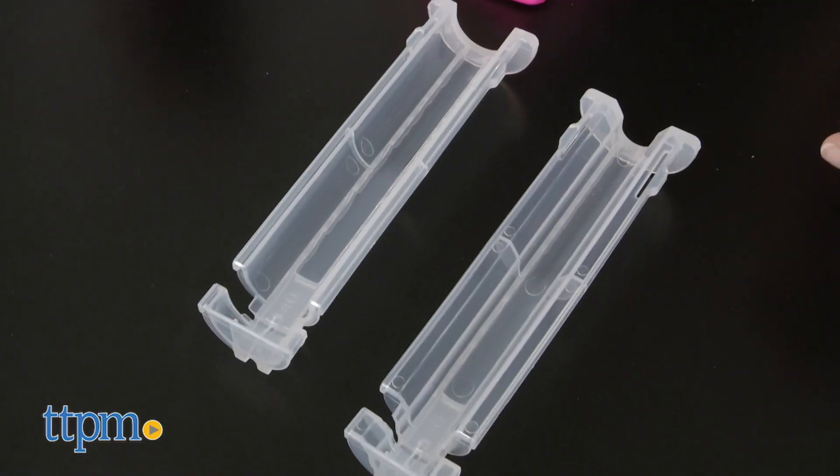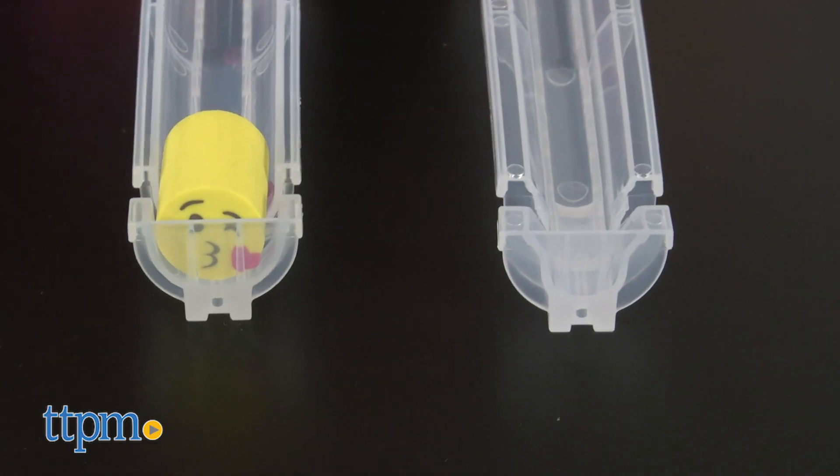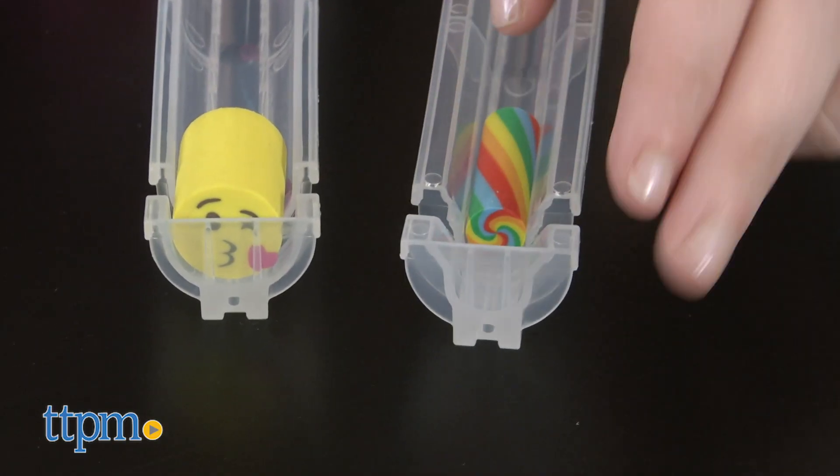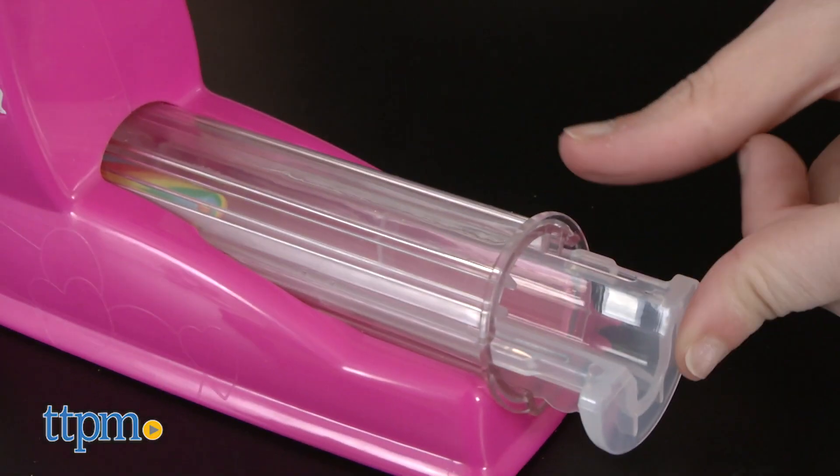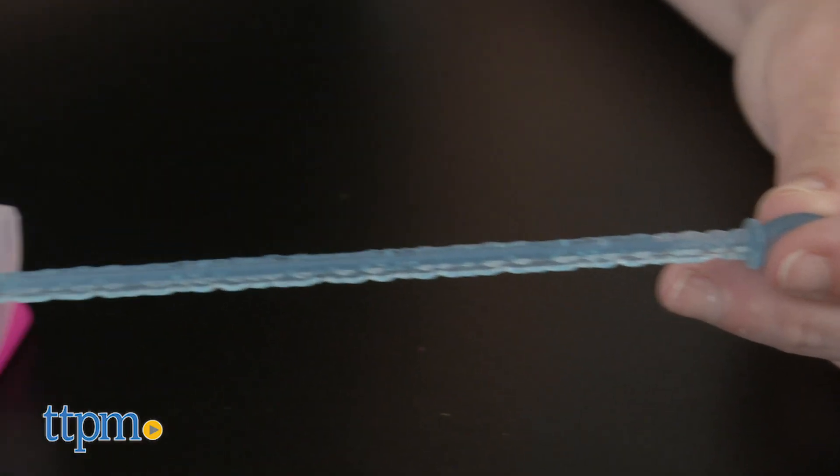To get started, you'll begin by cutting your Cutie or Mighty Stix to create jewelry beads. The sticks themselves are made out of an eraser-like, semi-squishy material, making them durable yet easy to cut.